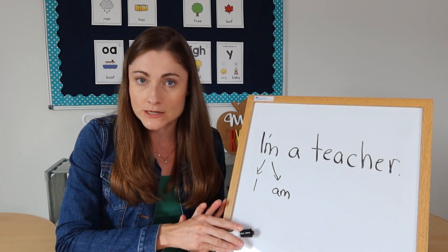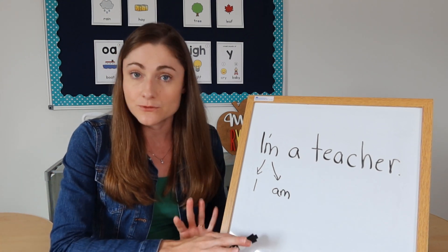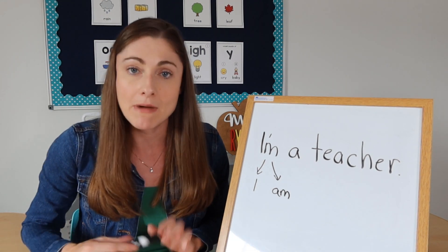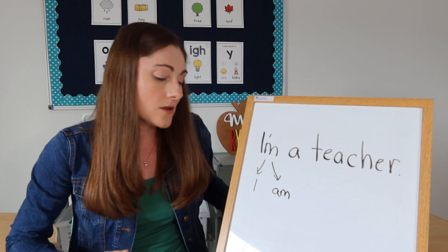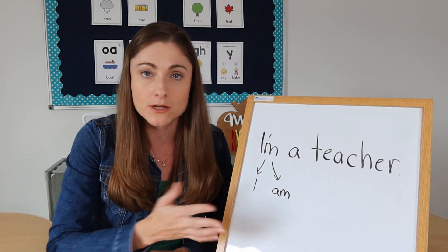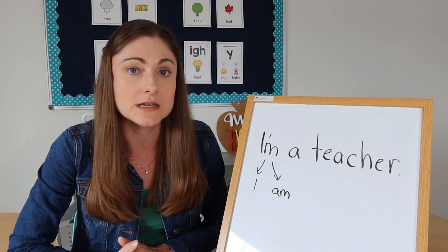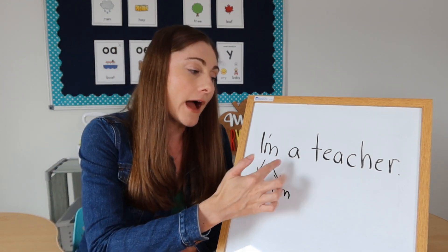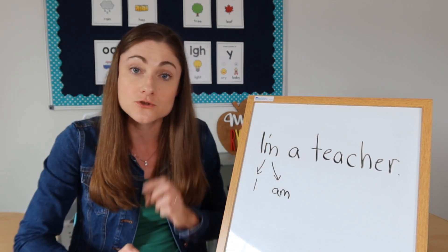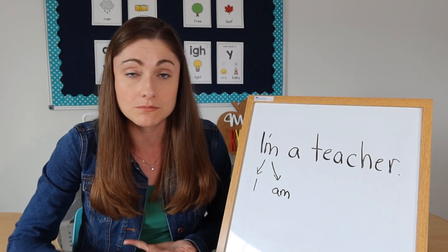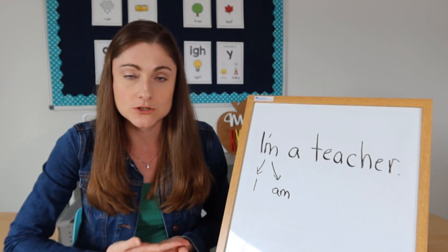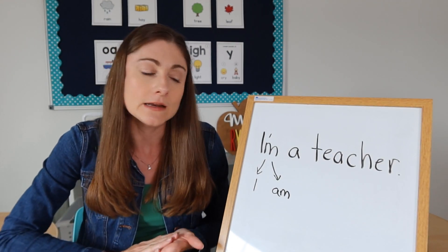I might have another example written on the board with a different contraction. Then what I might do is have the kids partner up and just orally, to each other, make up a sentence that uses one of the contractions from the example — so like, 'I'm a first grader.' They would just make up their own sentence but they would have to use the contraction. I feel like getting them to use something orally is really helpful and it's a good starting point before we ask them to read and write anything.